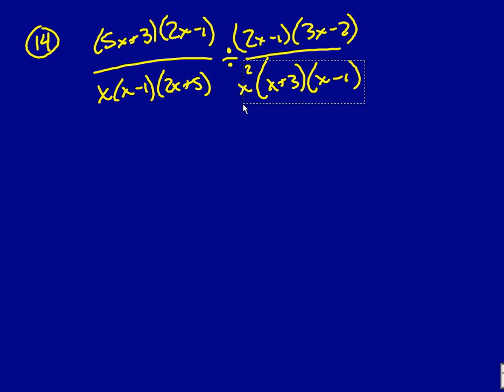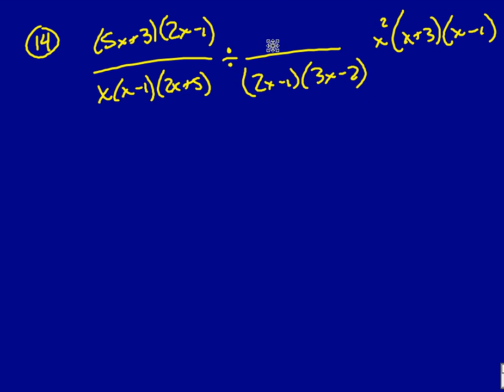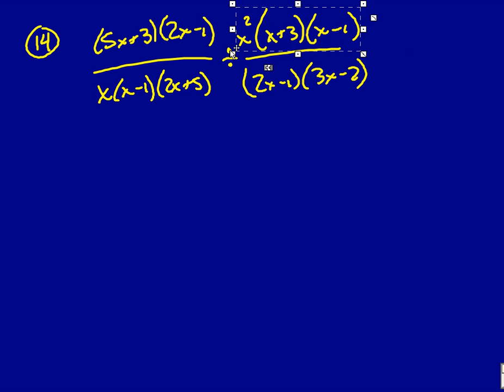That means that this second fraction, only the second fraction, I need to flip it around. What was on the bottom goes up to the top. What was on the top will come down to the bottom. And when I do that, that means I now changed it from division to multiplication.